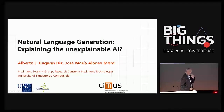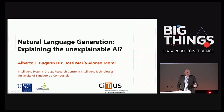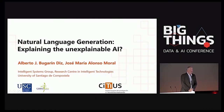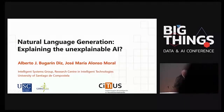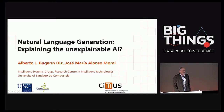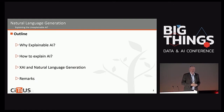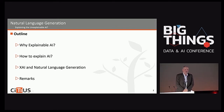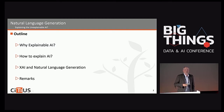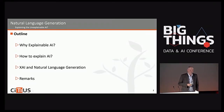Thank you all for being here this afternoon. My colleague Jose Alonso was not able to attend this conference, so it's my duty to present today. The title is about explaining the unexplainable AI. We will focus on explainable artificial intelligence, which is currently one of the most relevant topics in research and applications, particularly using natural language generation to explain what AI systems do.